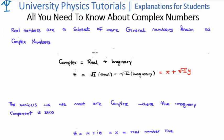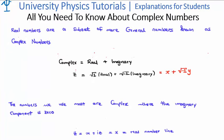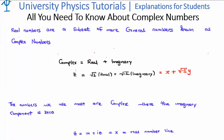Just because in our daily lives we are most familiar with real numbers, that's not a sufficient reason to believe that only real numbers exist. I'll ask that you accept that the most general type of number is a complex number, that it has two components — a real component and an imaginary component — that the building block for the real component is the square root of plus 1, and the building block for the imaginary component is the square root of minus 1. But in our daily lives it happens that the imaginary component is usually 0.